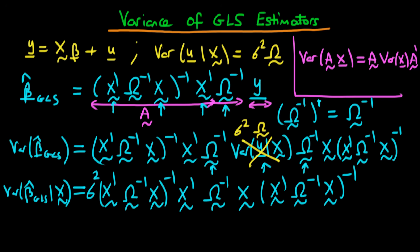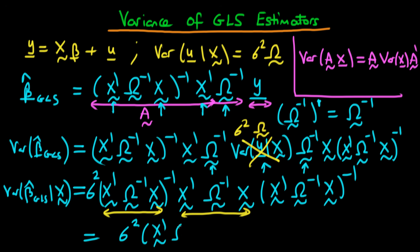We now have a matrix inverted times the matrix itself, which yields the identity matrix. Multiplying by the remaining term, everything simplifies. Therefore, the variance of β̂_GLS is simply σ²(X'Ω⁻¹X)⁻¹. This is the explicit form of the variance of GLS estimators.